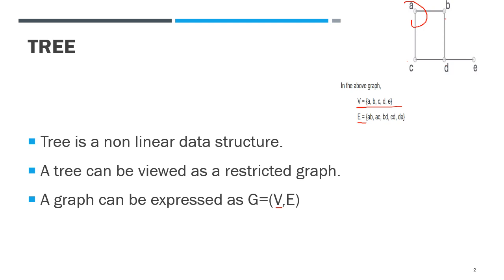The nodes of this tree are A, B, C, D. One connection between nodes is called an edge. So if we say edges: AB is an edge, AC is an edge, BD and CD are also edges of this tree.